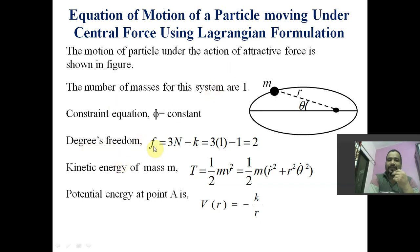The degrees of freedom f equal to 3n minus k is equal to 3 into 1 minus 1, equal to 2. Where n is the number of masses, which is 1, and degrees of freedom therefore becomes 2 because k is 1 here. Therefore degrees of freedom for this motion are 2 — meaning it is two-dimensional motion.